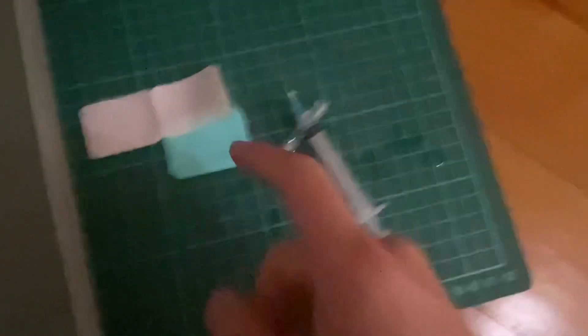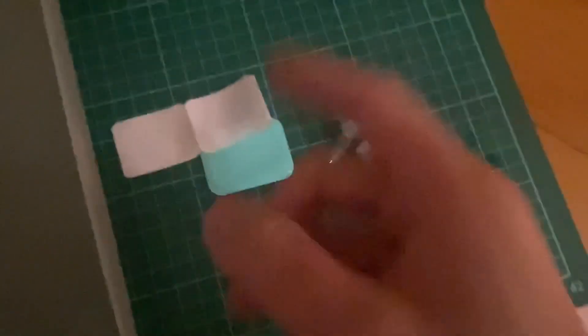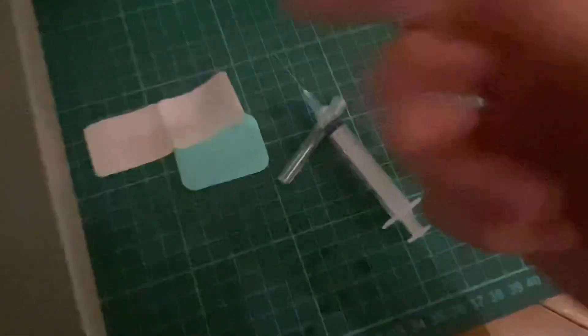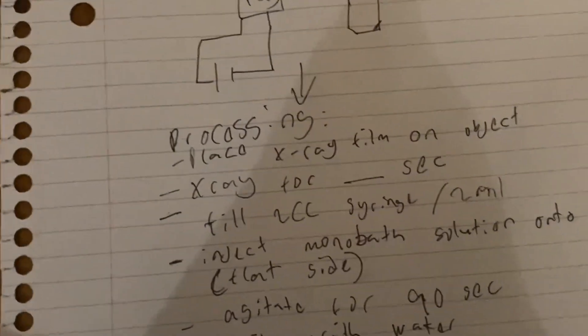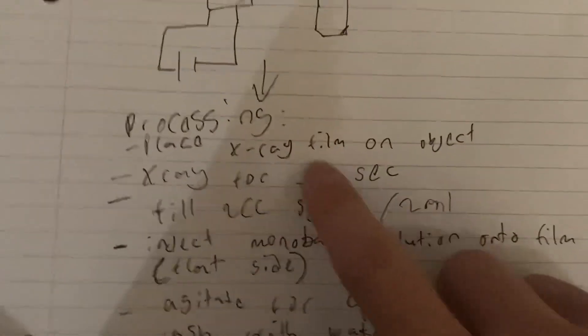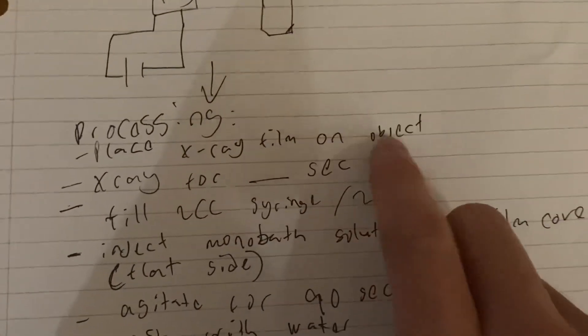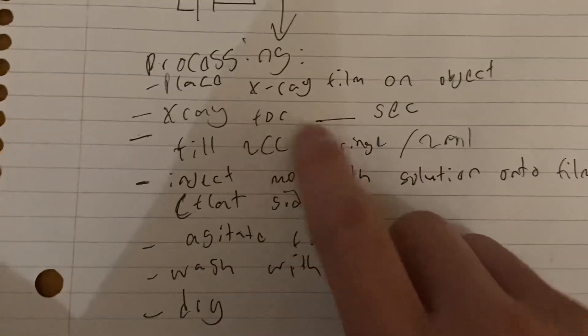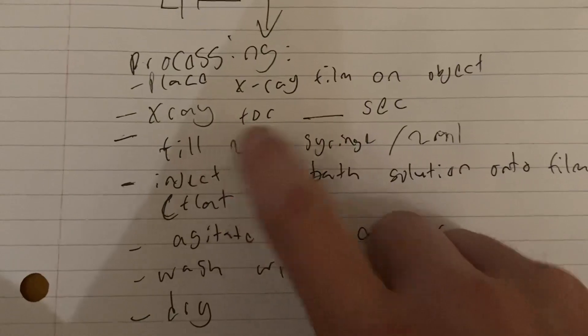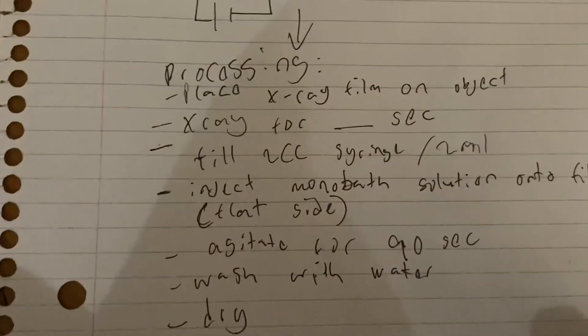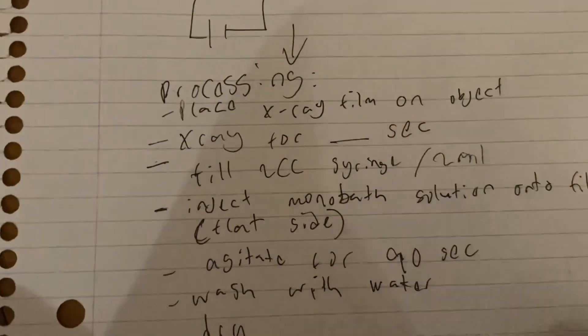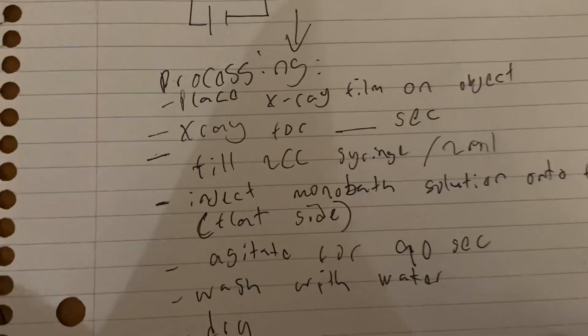If you want to develop your own X-ray films, you need to buy these. I'll probably leave a link or the name of it in the description. This is the process: you need to place the X-ray film, tape it on the target that you want to X-ray, then you X-ray for a set number of seconds. For me, I decided to run 10 seconds or more, which is good for developing my film.